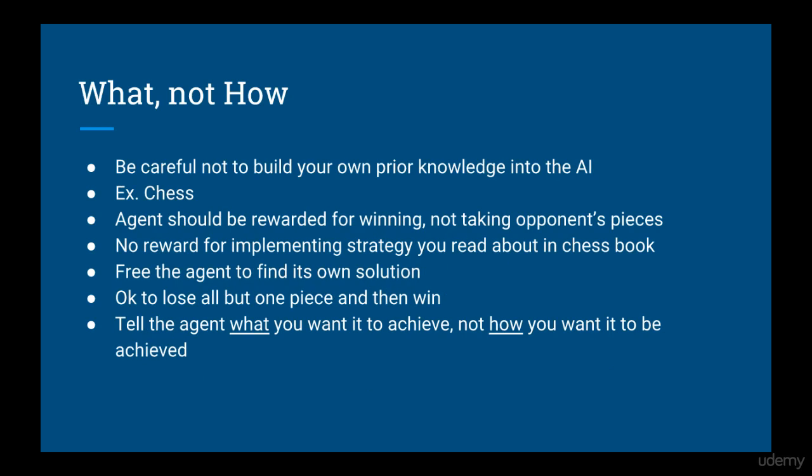One point of caution is to not build in your own prior knowledge into the AI. For example, in the game of chess, the agent should be only rewarded for winning, not for doing things like taking your opponent's pieces or implementing some strategy that you read about in a chess book. You want to leave the agent free to come up with its own solution. The danger of rewarding the agent for achieving sub-goals is that they might find a novel way to maximize the reward for the sub-goals without actually winning the game — for example, taking all but one of the opponent's chess pieces and then losing.